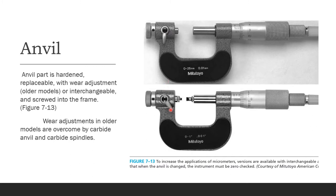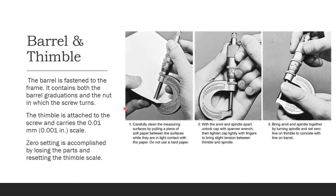The anvil is hardened and replaceable with wear adjustment; older models use interchangeable anvils screwed into the frame. Wear in older models is overcome by carbide anvils, which are better for precision and accuracy, as are carbide spindles. The barrel is fastened to the frame and contains both the barrel graduations and the nut in which the screw turns. The thimble is attached to the screw and carries the 0.001-inch scale; zero setting is accomplished by loosening and resetting the thimble scale.